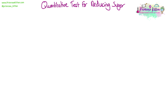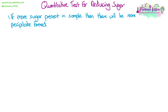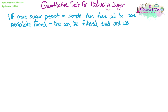We need to know how to do a quantitative test for reducing sugar. If more sugar is present in the sample then there will be more precipitate formed. So one way of measuring a quantitative value for the test for reducing sugar is to filter, dry and weigh this precipitate. More reducing sugar equals a greater mass of precipitate.